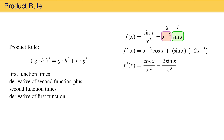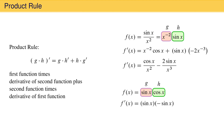As another example, consider the function sine x times cosine x. In this case, sine x is the first function g, and cosine x is the second function h. The first derivative is the first function, sine x, times the derivative of the second function, negative sine x, plus the second function, cosine x, times the derivative of the first function, cosine x. The result, when rearranged, is cosine squared x minus sine squared x.